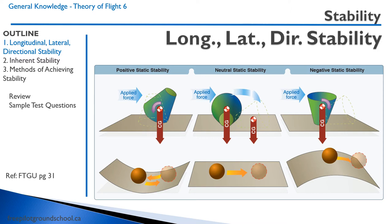Lastly, we have negative static stability. Assuming we have a cup that's upright, it has a center of gravity that's quite high. If it gets disturbed past a certain point, it's just going to fall over. This is analogous to a ball on a hill — if it gets disturbed from the top of the hill, it will just keep rolling.